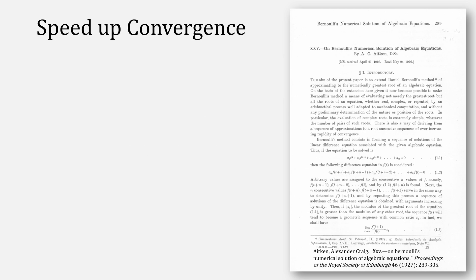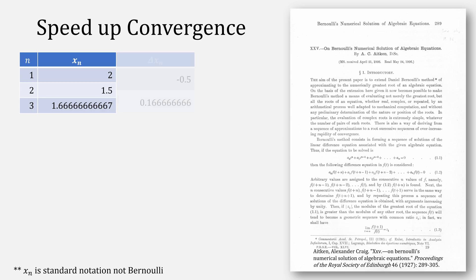The way it works is you take three consecutive numbers from our series, this example 2, 1.5, and 1.6 repeating. Then you compute the finite difference between each successive term, written as delta x.